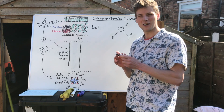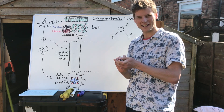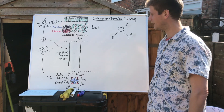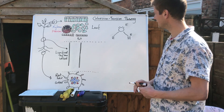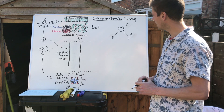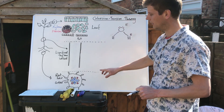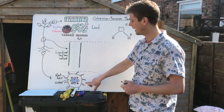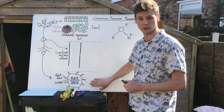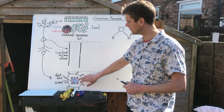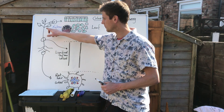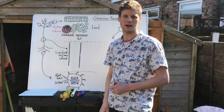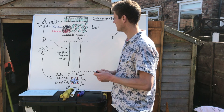Hello again everyone. So second one of the day — I've had another request for cohesion-tension theory and an explanation of that. Cohesion-tension theory explains how water is able to move from the soil, through the roots, up through the plant via the xylem, to the leaves where it is evaporated by transpiration.